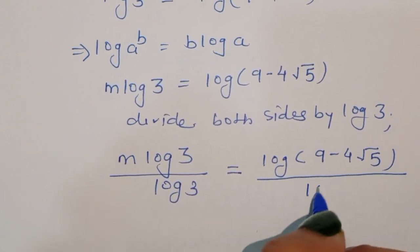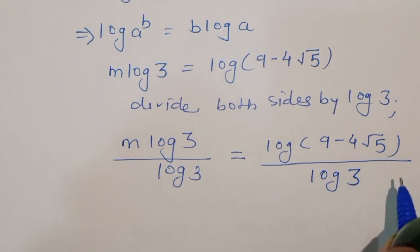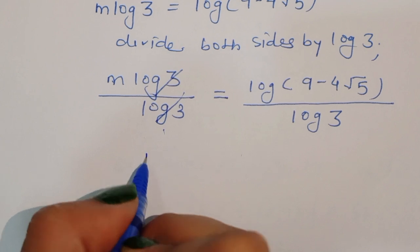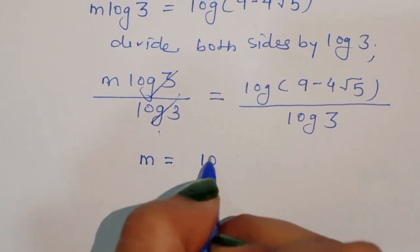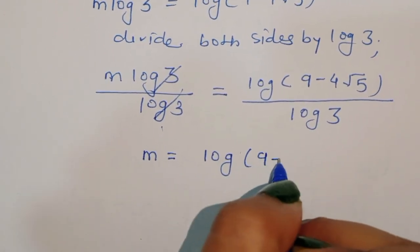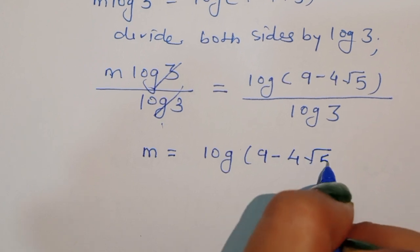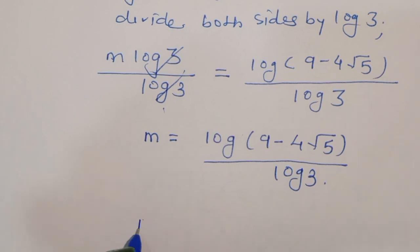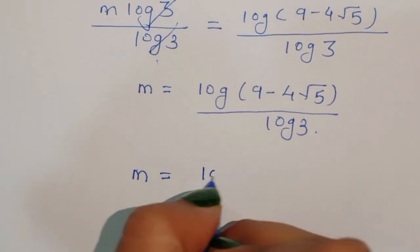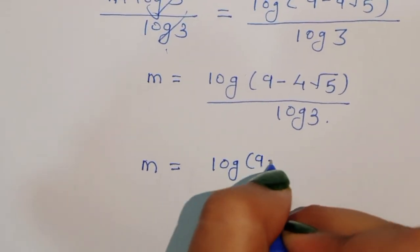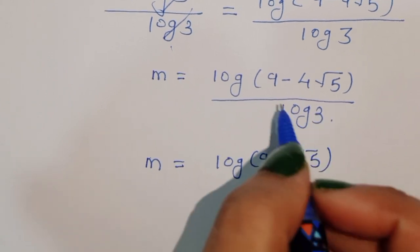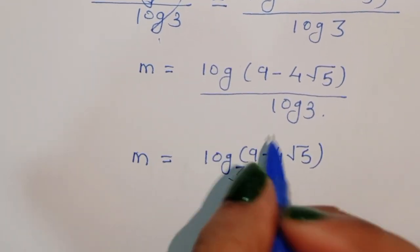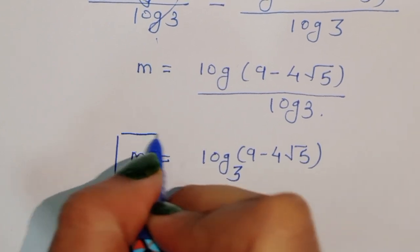So m is equal to log of 9 minus 4 square root of 5 divided by log of 3, or equivalently m is equal to log base 3 of 9 minus 4 square root of 5. This is the value of m for the second case.